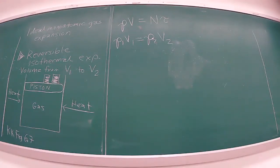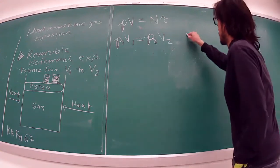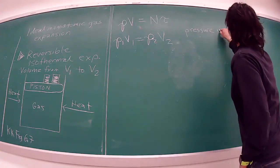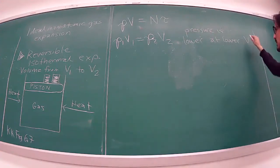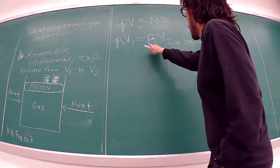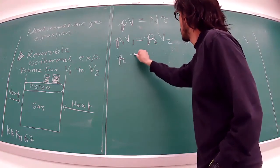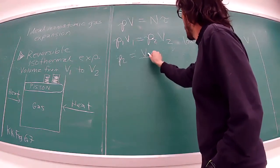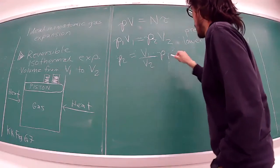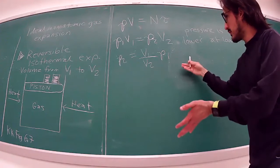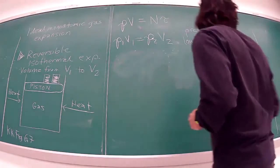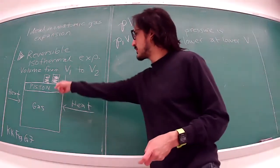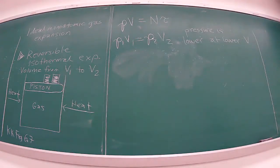From here it's easy to see that the pressure is lower at larger volume. P₂ = (V₁/V₂)·P₁, and since V₂ is larger, this ratio is less than one, so the pressure at the final stage is less than at the beginning. That makes sense because it's just trying to cancel out the weight that was removed.